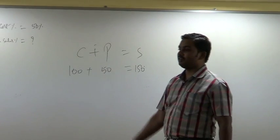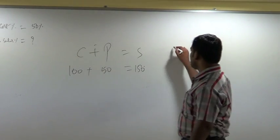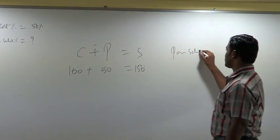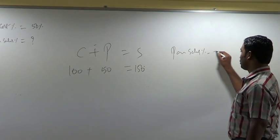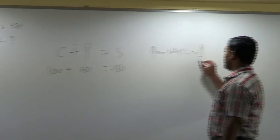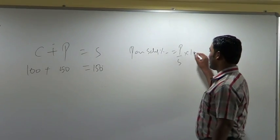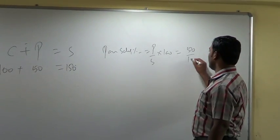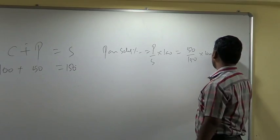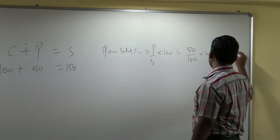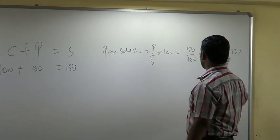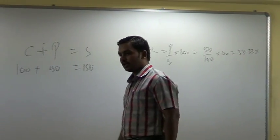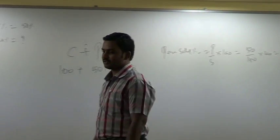What do I want? Profit on sales percentage. Profit on sales equals P divided by S into 100 — it is 50 divided by 150 into 100. It is 33.33% on sales.